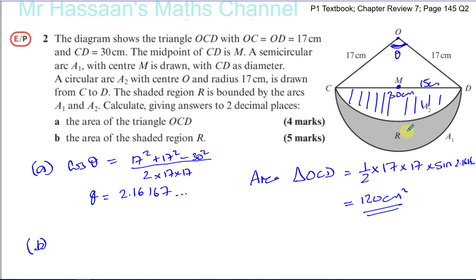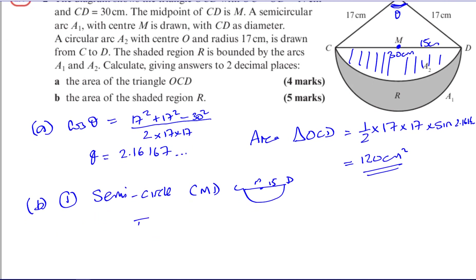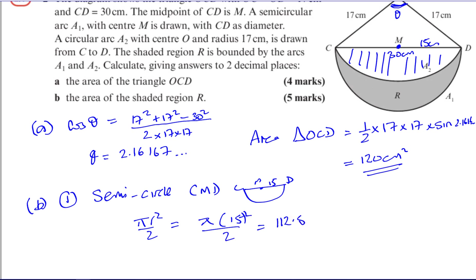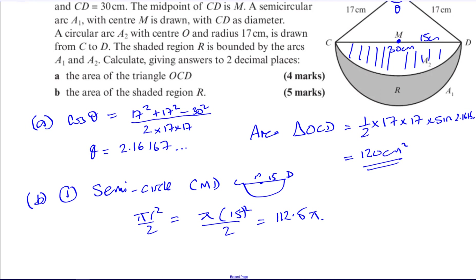So we need to first find the area of the semicircle, the semicircle CMD. There's M, there's C, and there's D, and its radius is 15. So the area of the semicircle is going to be pi R squared over 2, which is pi times 15 squared divided by 2. So you have 15 squared divided by 2, times pi. So this is like 112.5 pi. That's the area of the semicircle CMD.